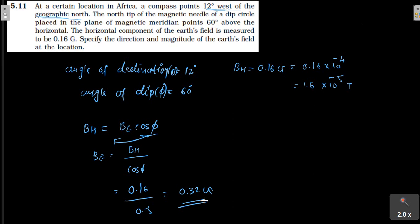And the direction is 12 degrees west of north. This answer is given in the book. So, this is simple calculations.